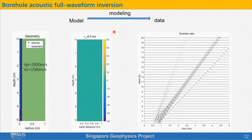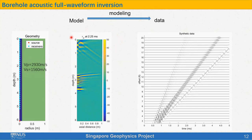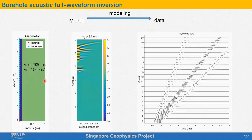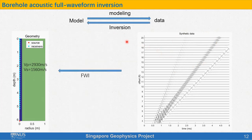Before I talk about full waveform inversion, I would like to stress modeling first. Modeling is another name of numerical simulation. If we know the velocity models, we can solve the elastic wave equations to obtain the data — this process is from model to data, so it's called modeling. In reality, we do not know the velocity models, and we would like to invert the velocity models from the data. So this is called inversion. Inversion is just the other way around of modeling.